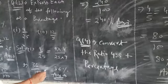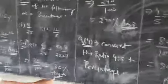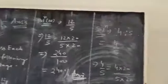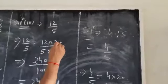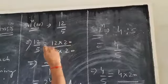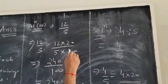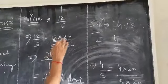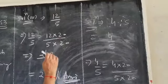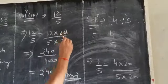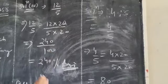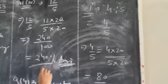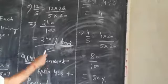Now solution of 12 upon 5 is equal to 12 into 20 divided by 5 into 20, that is equal to 240 divided by 100. Therefore, it is 240 percent, which is the required answer.